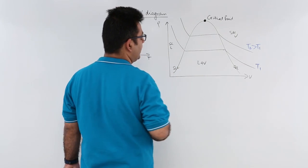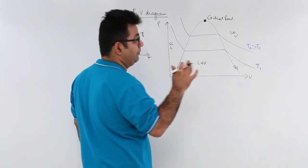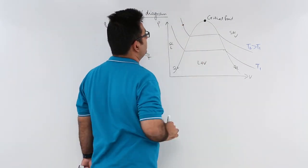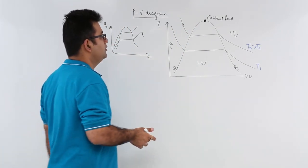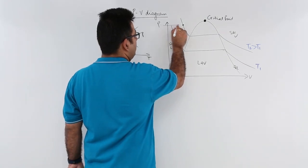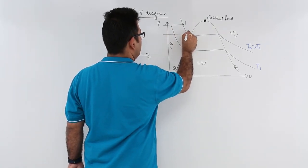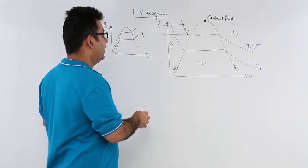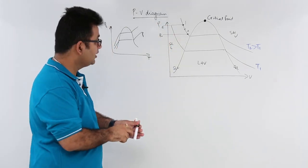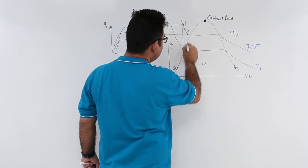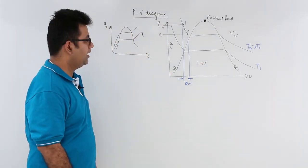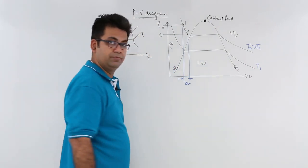At constant temperature, if you decrease the pressure — say you start in the liquid region and carry out the process isothermally, decreasing pressure from P1 to P2 — due to this decrease in pressure in the liquid region, there is a change in the specific volume, but it is relatively small.